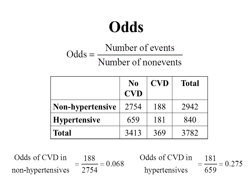Likewise, we can calculate the odds of cardiovascular disease in hypertensives. We take the number of events, 181, divided by the number of non-events, 659. We do that arithmetic and we get 0.275 — those are the odds of having cardiovascular disease in this group of hypertensives.